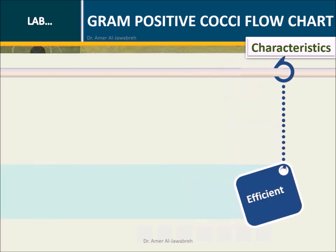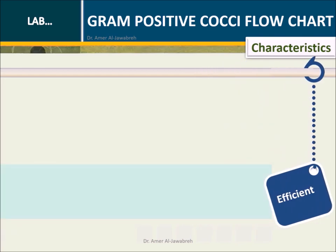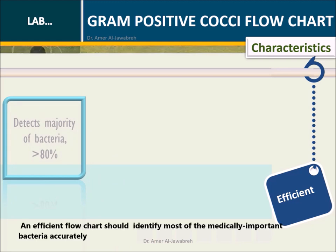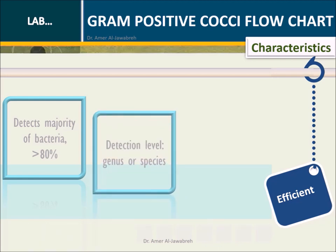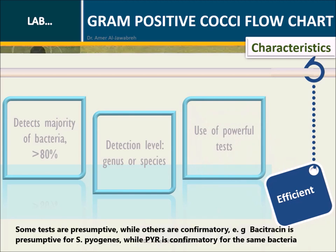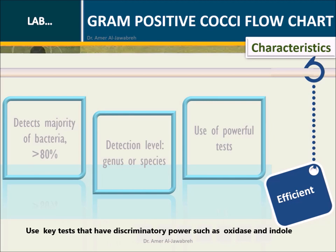Efficient — detects the majority of bacteria, more than 80%. An efficient flowchart should identify most medically important bacteria accurately. Detection level: genus or species. A flowchart should identify bacteria to at least genus level, and better to species level, such as using the coagulase test for S. aureus. Use of powerful tests: some tests are presumptive while others are confirmatory. For example, bacitracin is presumptive for S. pyogenes, while PYR is confirmatory for the same bacteria. Use tests that have discriminatory power, such as oxidase and indole.